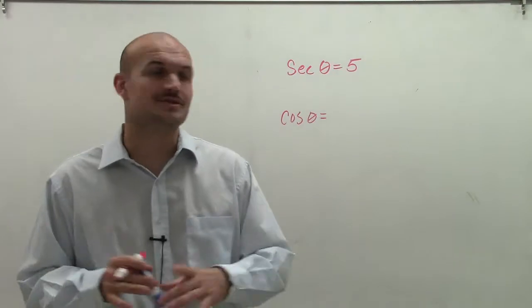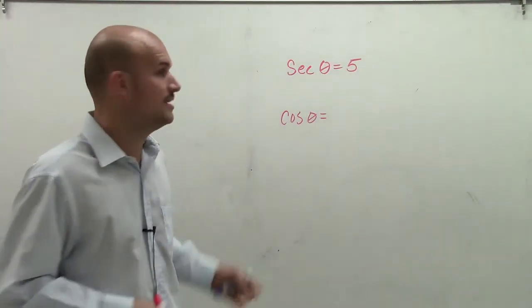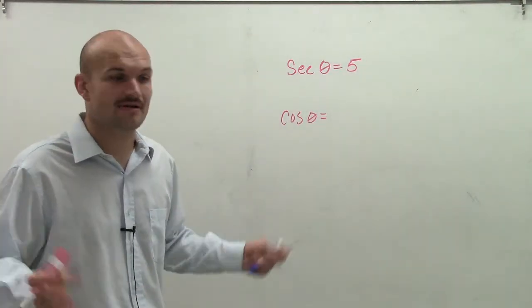OK, welcome. So what I want to do is, if given the secant function, how do we determine the cosine function?